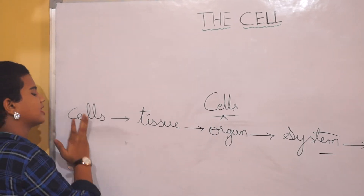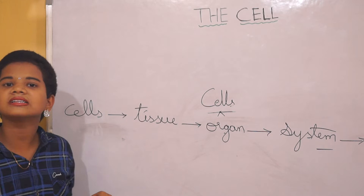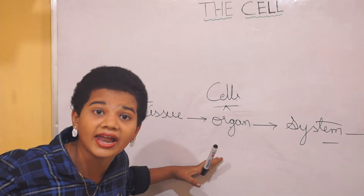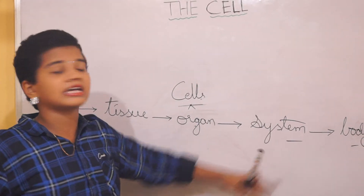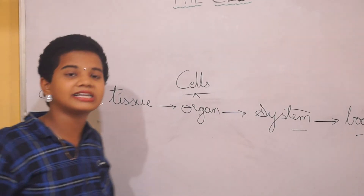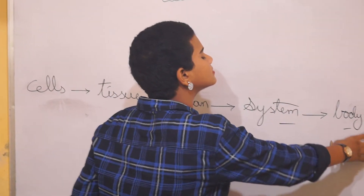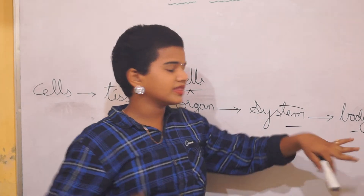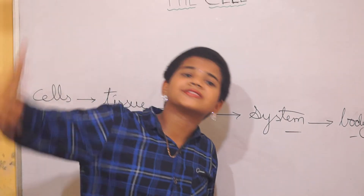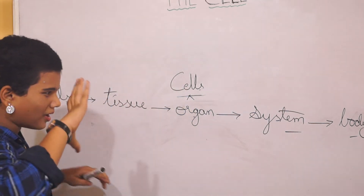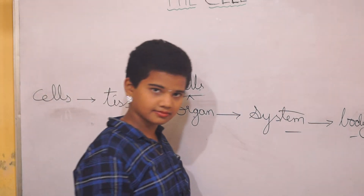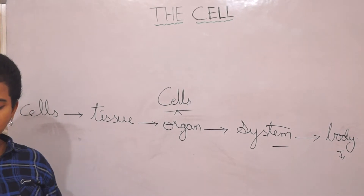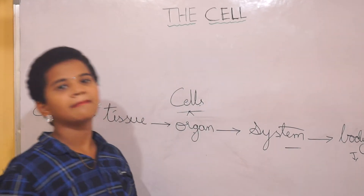To repeat: a group of cells together forms a tissue; a group of tissues together forms an organ; a group of organs together forms systems such as the digestive system, respiratory system, and excretory system; and a group of systems forms a body, such as humans. A body contains millions and billions of cells, has more than one cell, and is called a multicellular organism. Examples for multicellular organisms are animals and plants.